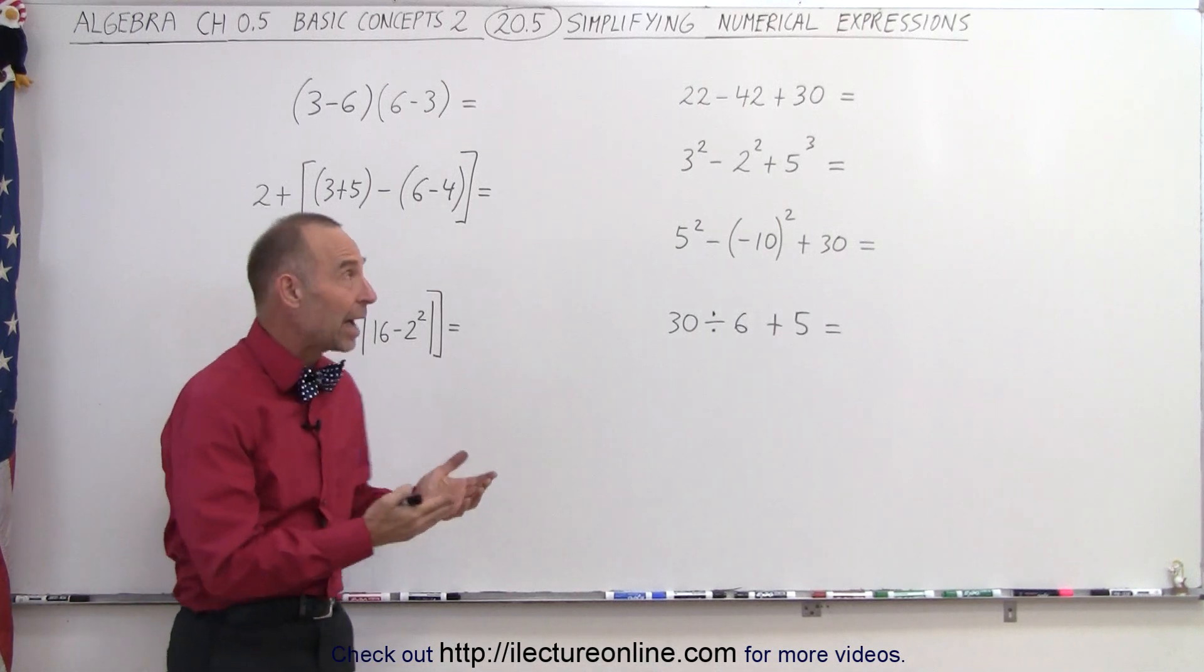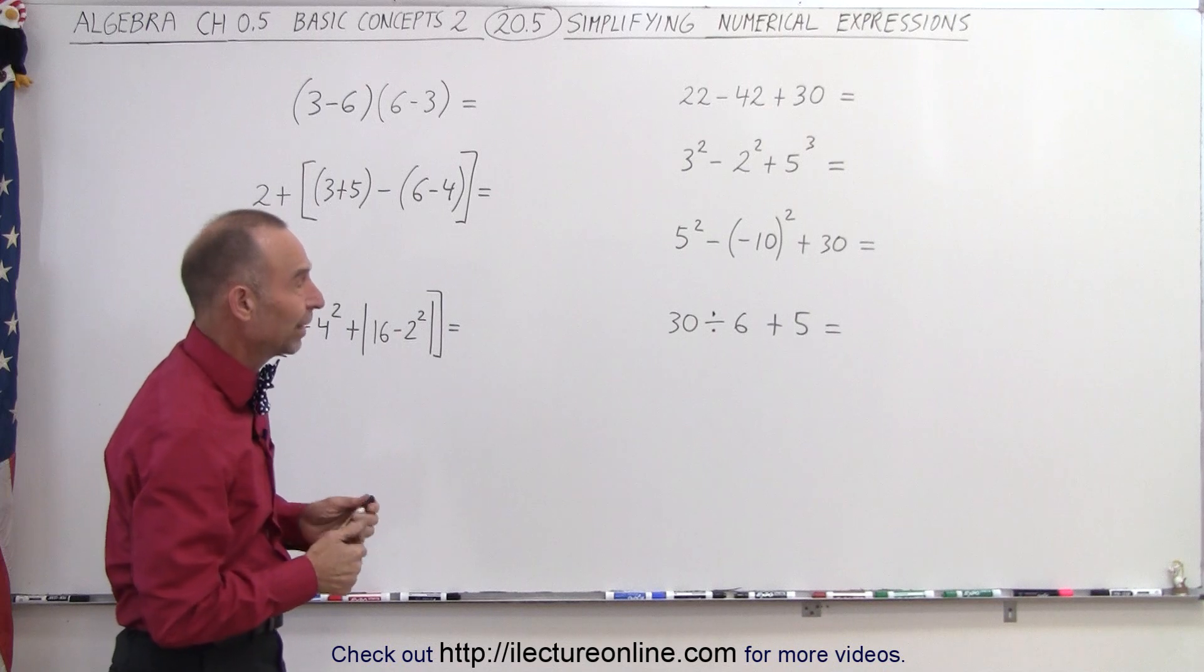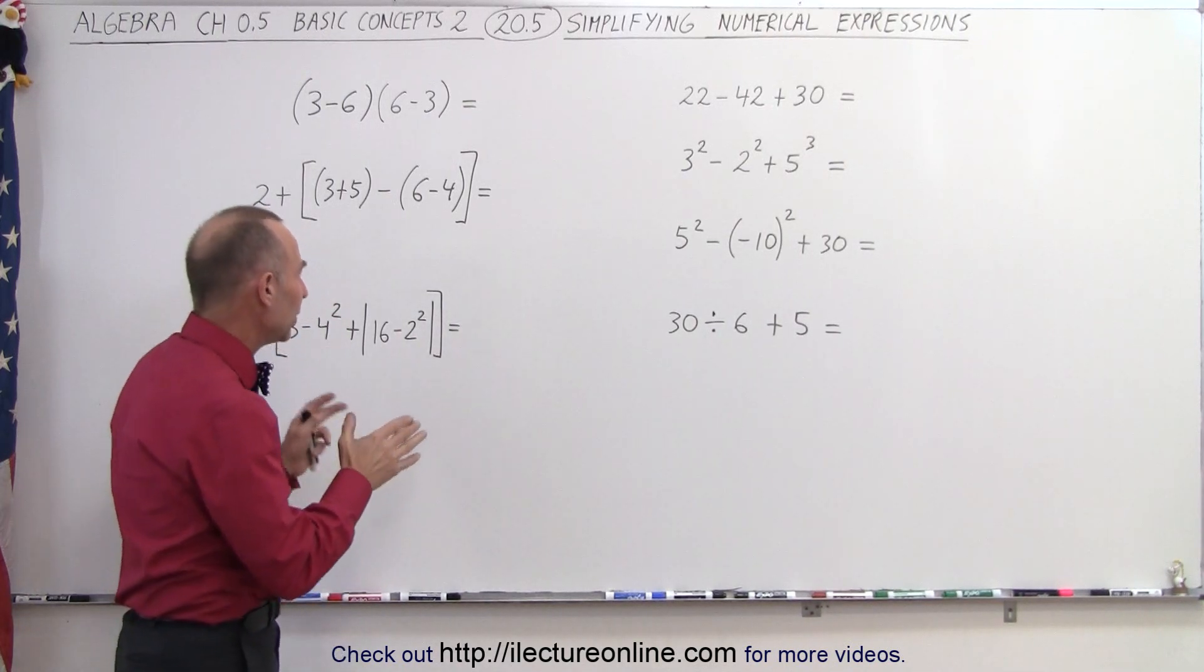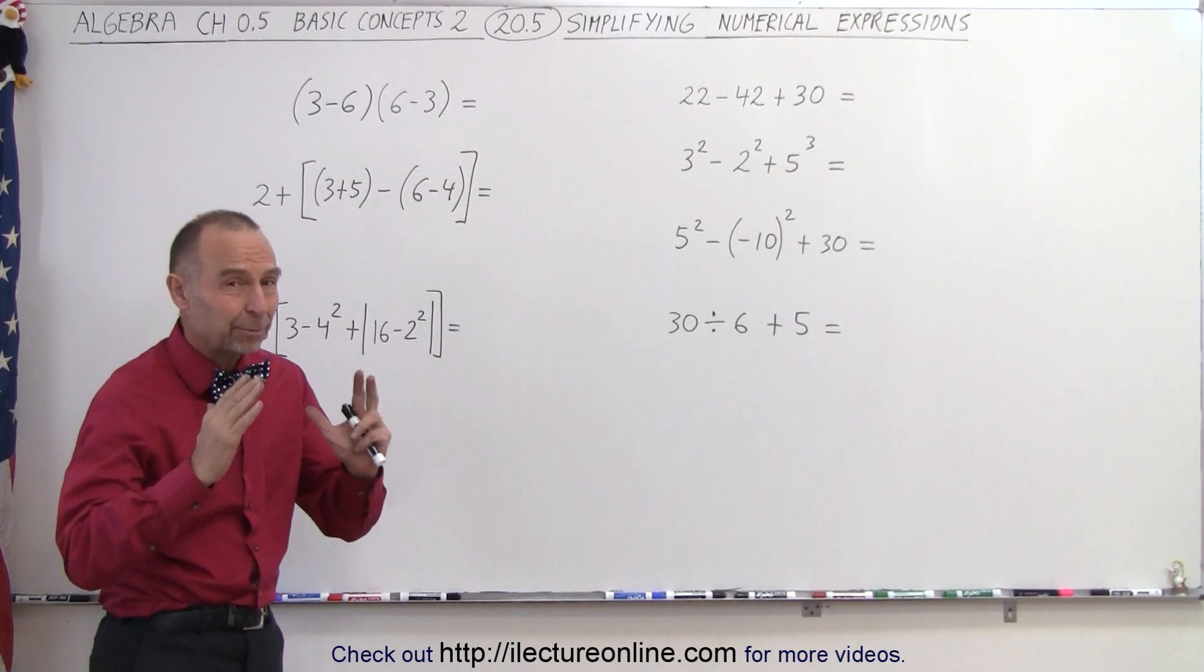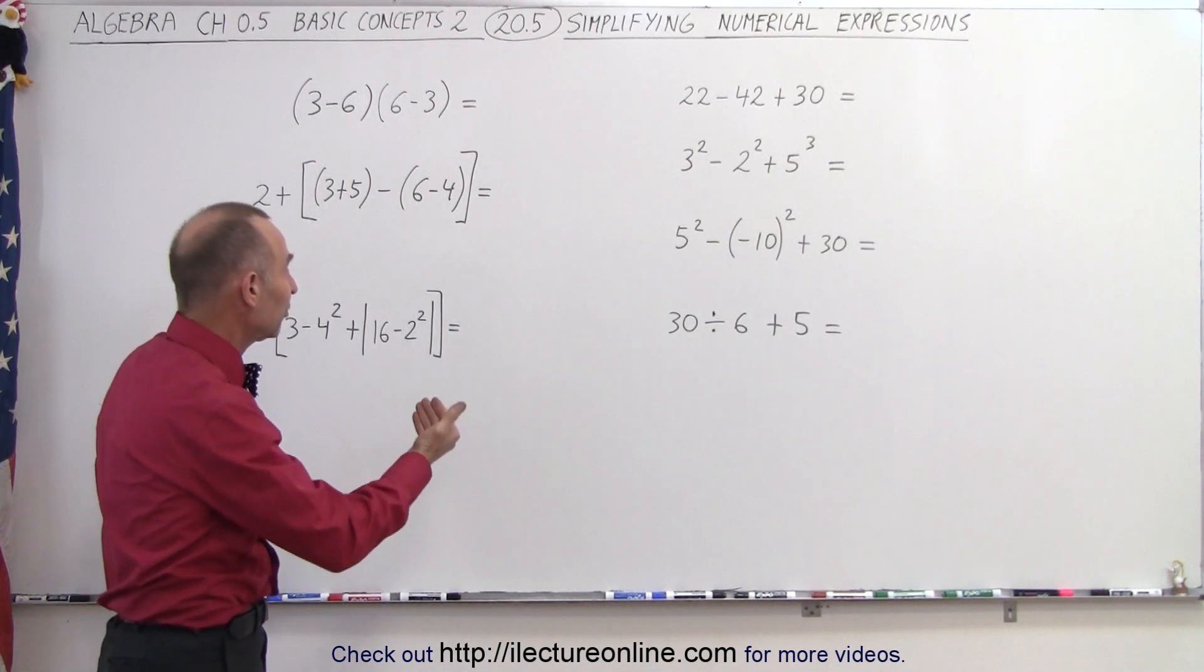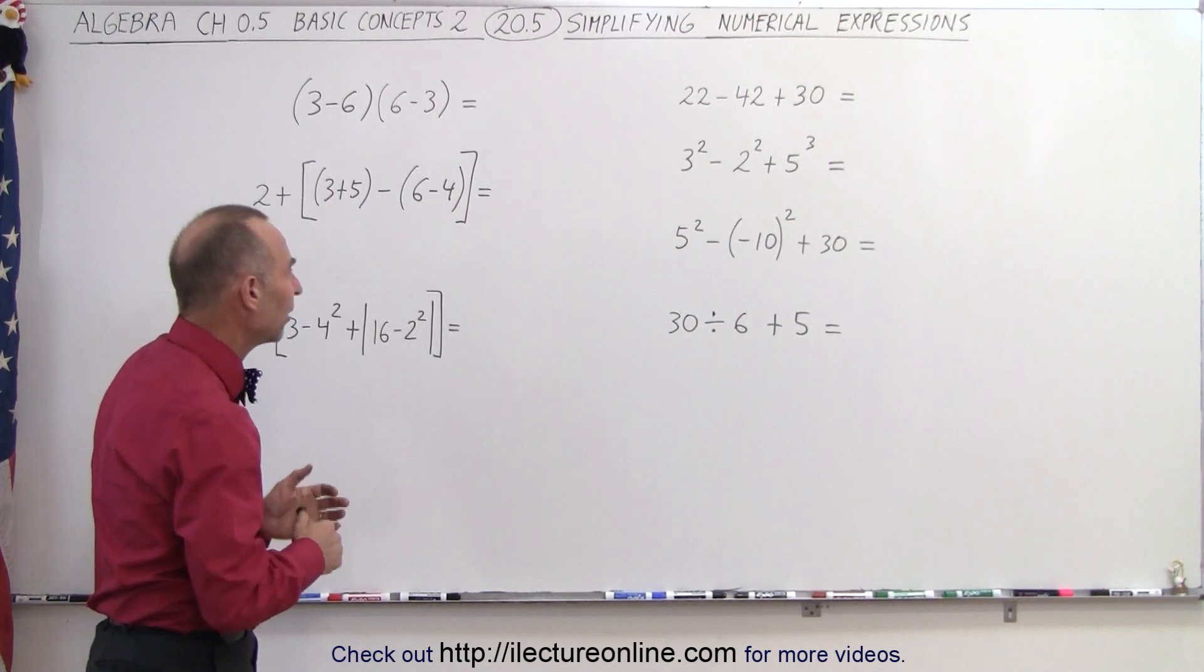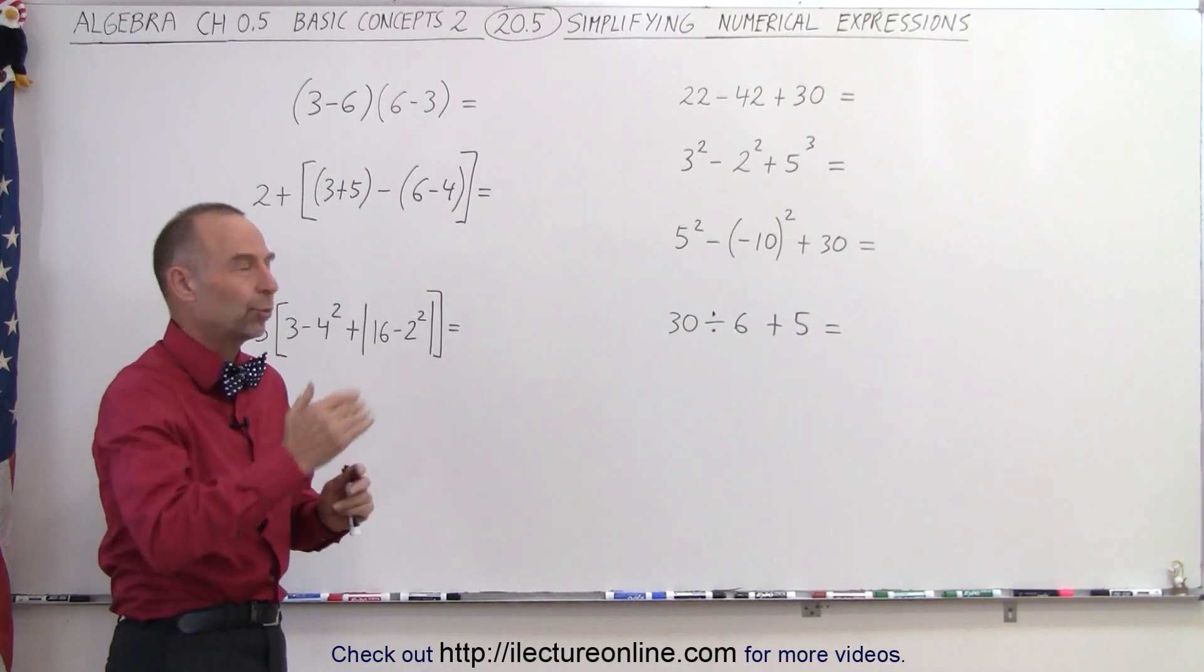So let's go ahead and learn how to simplify these numerical expressions. The rules are that we need to get rid of what's inside parentheses first. Then we do exponents. Then we do division and multiplication. And then we do addition and subtraction in that order. And then if there's a tie, we go from left to right.